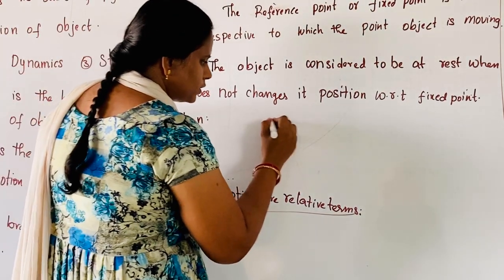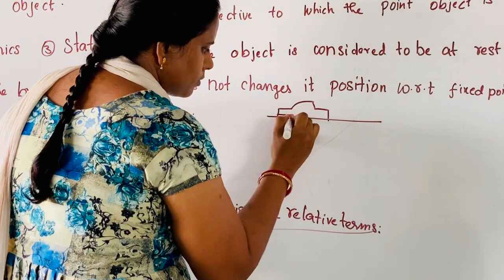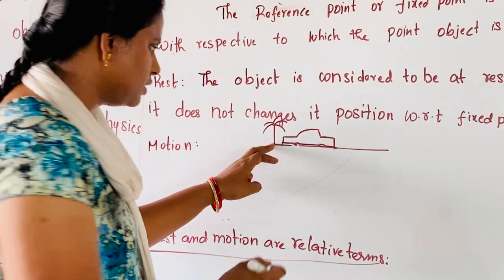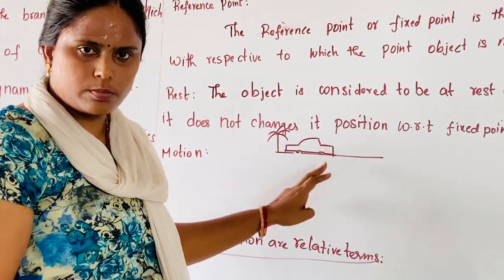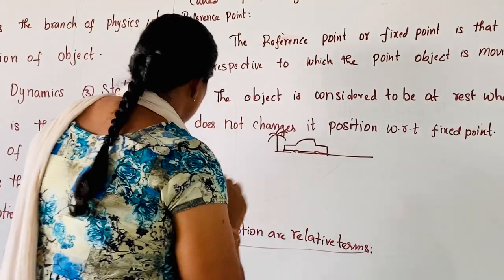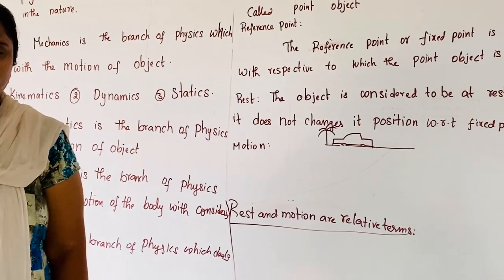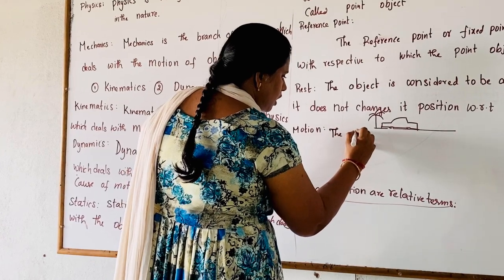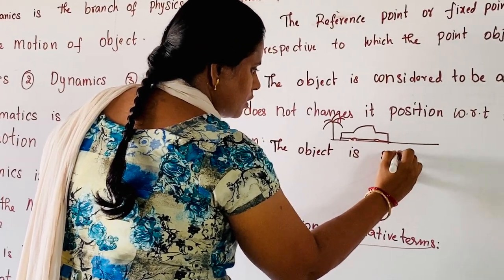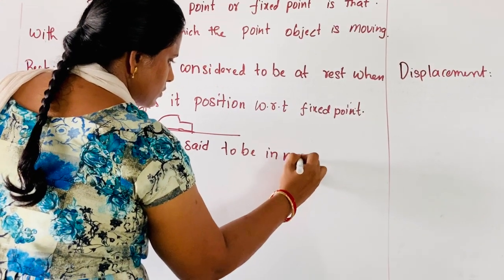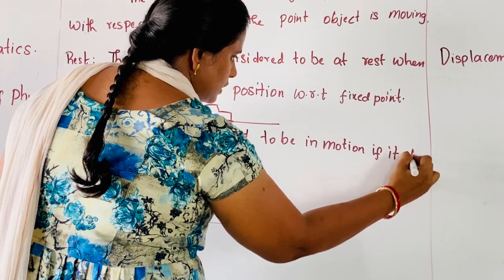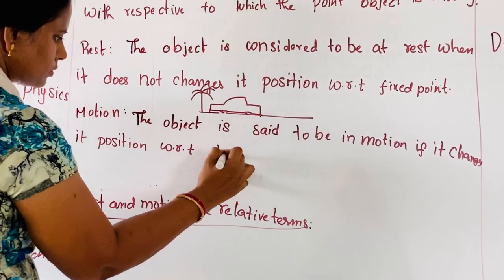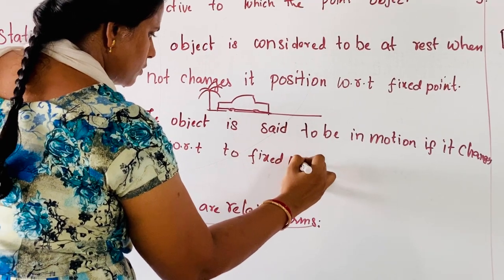Let us consider an example. Suppose a car is moving on the road and there is a tree beside it. With respect to this tree, if the car is not changing its position, then we can say that the object is at rest. Now motion: the object is considered to be in motion when it changes its position with respect to the fixed point.